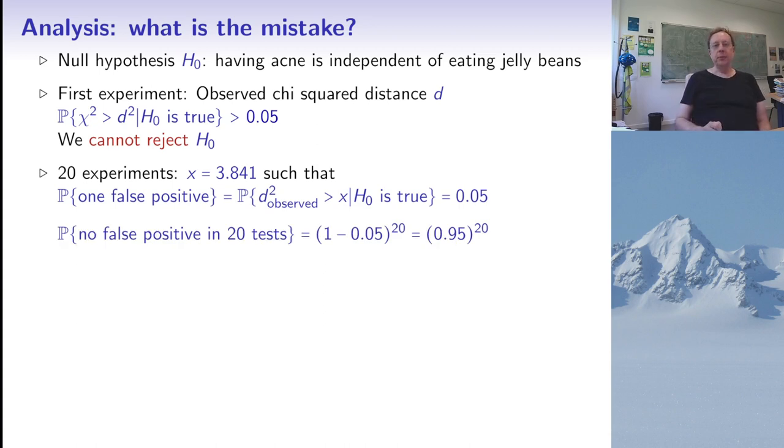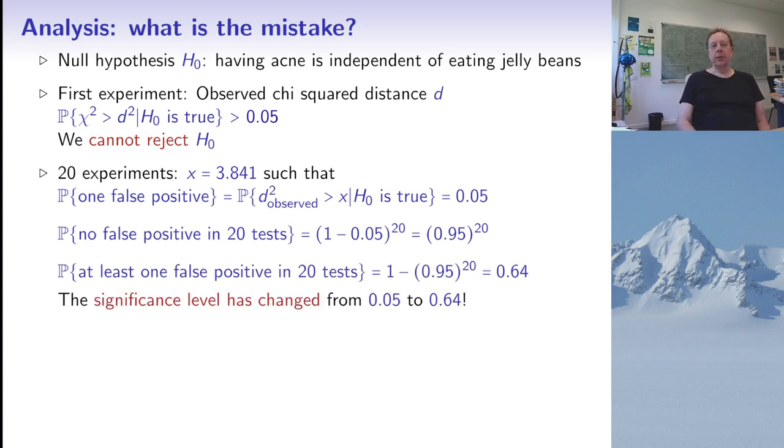What they do is repeat the experiment 20 times. This value 3.841, that would be the value such that the probability of observing a larger chi-squared distance is 0.05. That's the probability of finding one false positive. But what about repeating the test 20 times? The probability of finding no false positive in 20 tests is 0.95 to the power 20. The probability of getting at least one false positive in 20 tests is 1 minus this, about 0.64. The significance level has dramatically increased from 0.05 to 0.64.